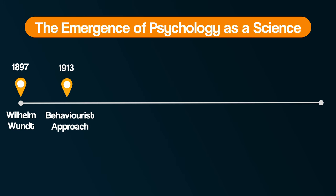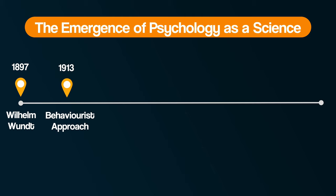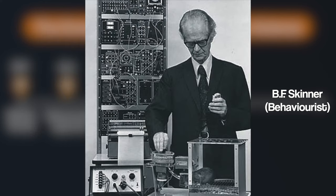Secondly, in the early 1900s, behaviourism came along and used laboratory methods to objectively measure behaviour. For example, B.F. Skinner studied the influence of reward and punishment in the learning of behaviour, and created his own highly controlled apparatus called the Skinner Box, to ensure control over all variables and to carefully measure results through observation.